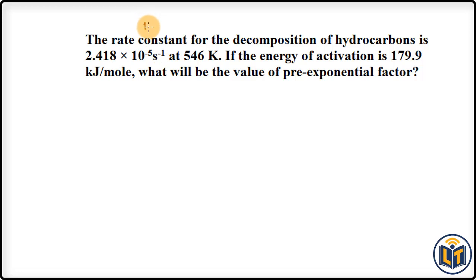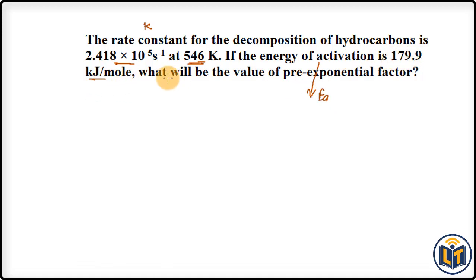The problem states that the rate constant K for the decomposition of a hydrocarbon is 2.418 × 10⁻⁵ per second at a temperature of 546 K. The energy of activation Ea is 179.9 kJ/mol. We need to calculate the value of the pre-exponential factor A.